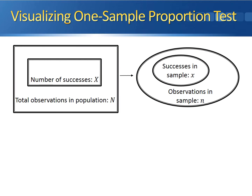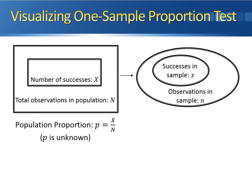Here's the idea behind the one-sample proportion test. Over in the big box on the left we have all of the observations in the population. The total number of observations in the population is denoted by capital N. Inside the smaller box on the left we have all of the successes — all observations that fit whatever characteristic we're looking for. The total number of successes is represented by capital X. Our population proportion is denoted by capital X divided by capital N.